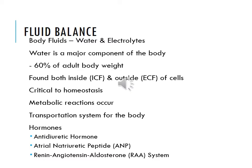Body fluids consist of water and electrolytes. Water is a major component — it's 60% of adult body weight. It's found both inside the intracellular fluid and the extracellular fluid, so inside and outside of the cells. It's critical to homeostasis. Metabolic reactions occur; it's the transportation system for the body. You have hormones: the antidiuretic hormone, plus the atrial natriuretic peptides (ANP) and the renin-angiotensin-aldosterone system (RAAS).